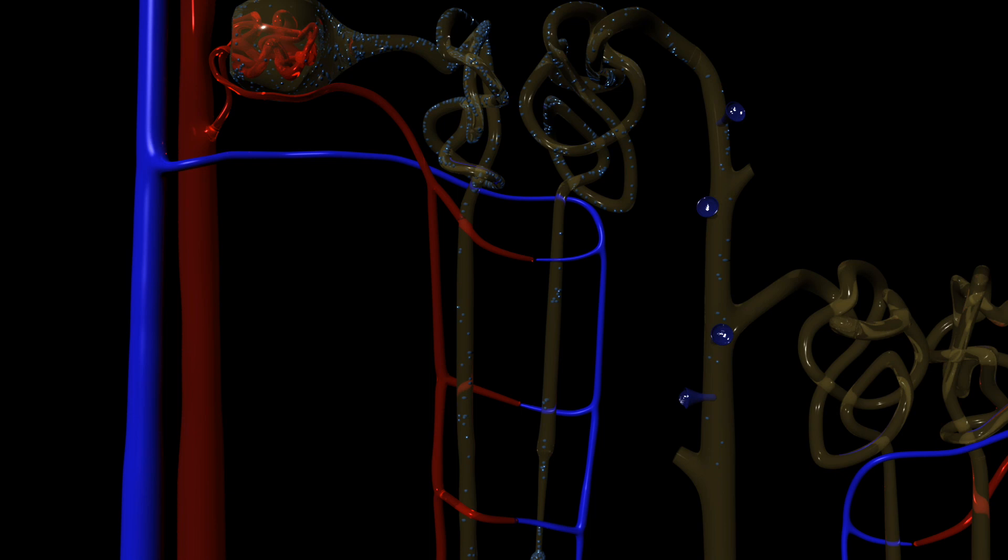The nephron funnels water to the bladder to be excreted. Water enters the nephron from the bloodstream and passes all the way through the nephron to the bladder. At different points in the nephron, water can be reabsorbed back into the bloodstream instead of being excreted.